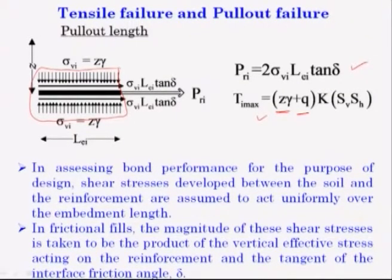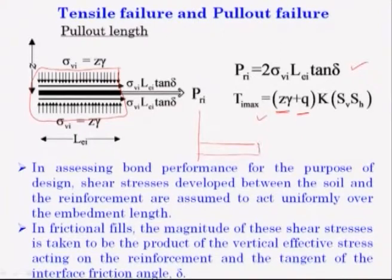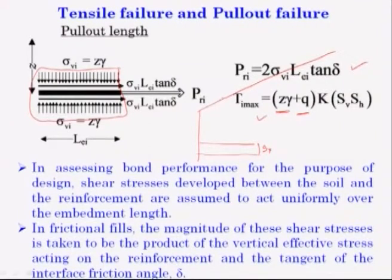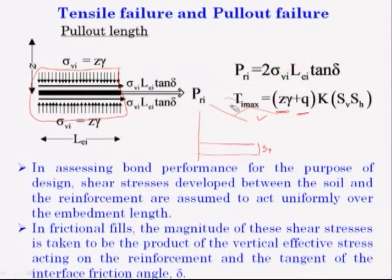S_B is your spacing in the vertical direction; S_H is your spacing in the lateral direction. Suppose this is a wall and you are placing reinforcement like this — that means spacing in vertical direction is S_B. If this wall is going in a long distance, spacing in the lateral or horizontal direction is also S_H.